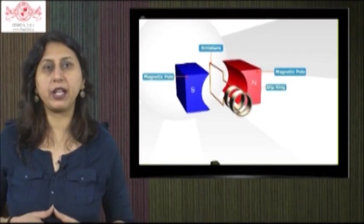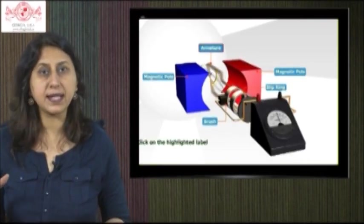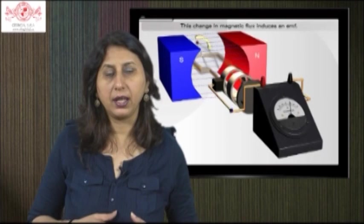The current collecting arrangement consists of slip rings and brushes. As the armature rotates about an axis perpendicular to the magnetic field, magnetic flux keeps on changing continuously with time. This change produces induced EMF and the deflection shows on the galvanometer, indicating that induced EMF produces the current.